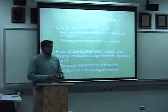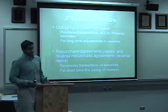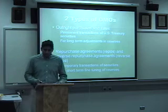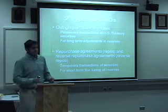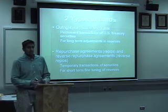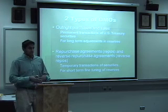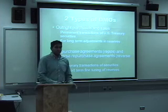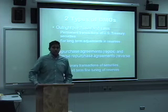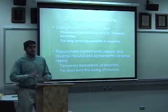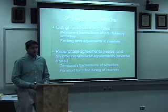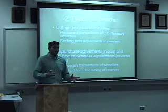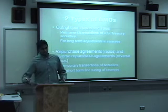There are two types of OMOs. The first is outright purchases and sales, in which the Fed buys or sells securities as a permanent, long-term transaction. Oftentimes if the Fed is buying the security, this part of the portfolio is called buy and hold — it will hold the security until it fully matures, and then all the profits from that security will be reinvested.